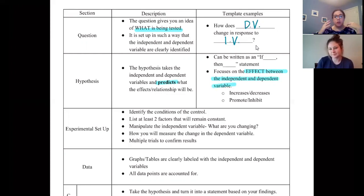The key thing about the hypothesis is focusing on the effect between your independent variable and your dependent variable. Now when you make this prediction you can either say that one is going to cause an increase or decrease. Maybe you want to use the words promote or inhibit. It's even okay to make your hypothesis predicting that there's going to be no effect on the dependent variable.